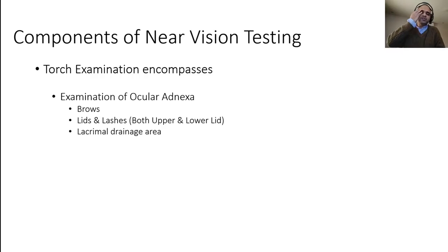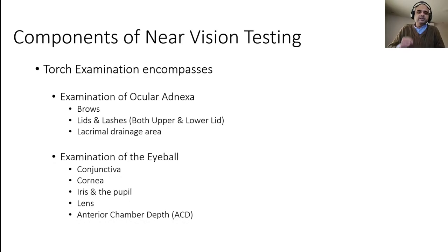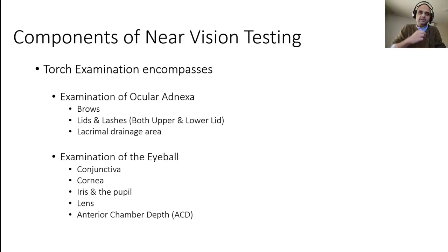Adnexa refers to structures surrounding the eyeball — your brows, your lids together with your lashes, and the lacrimal drainage area. The examination of the eyeball covers the conjunctiva and other external structures visible with a torch: the cornea and conjunctiva. Remember, the cornea is not covered by conjunctiva; conjunctiva begins at the limbus and covers the sclera. You can also look through the transparent cornea at the iris and pupil.